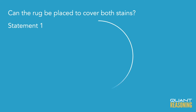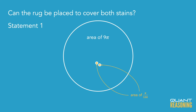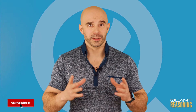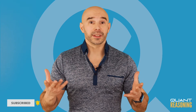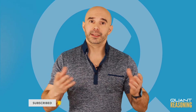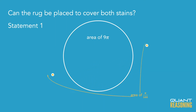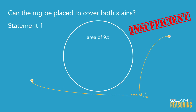Statement one gives us the exact area of the rug, but the problem is we don't know how close the two stains are to one another. The two stains could be practically touching each other, in which case a rug with area 9π would certainly cover both stains, each of which is only π/100 — so it's very easy to get a yes. But on the other hand, since we don't even know the size of the office, the stains could be miles away from one another, in which case the rug wouldn't be big enough to cover both stains. So statement one is not sufficient on its own.